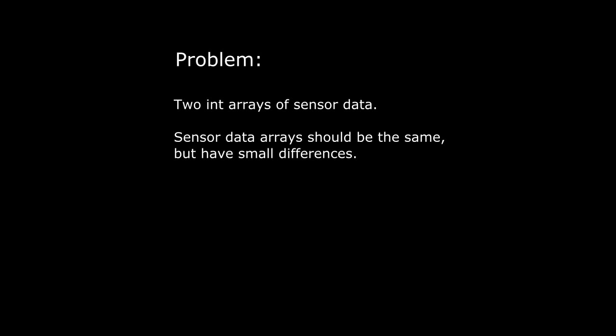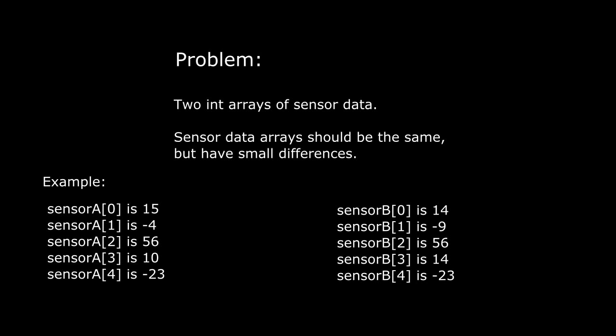So here's the problem we're going to try to solve recursively. We've got two integer arrays of the same length, representing sensor data. The second sensor is intended to be redundant, so in fact the two arrays should have identical values. But for practical reasons, there are going to be small differences. So the function we're writing is computing the total absolute differences in the values. So for example, if sensor A sub 3 is 10 and sensor B sub 3 is 14, that's a difference of 4. And it doesn't matter which value is higher than the other. It's the absolute difference that we need. So we're summing the total absolute differences among the values in the same locations in the arrays.